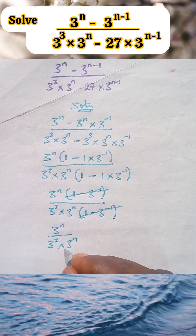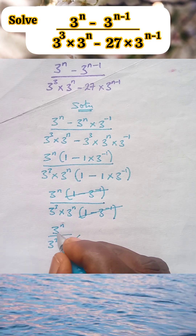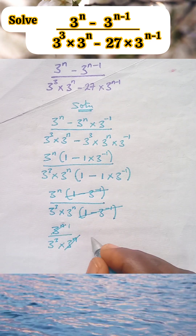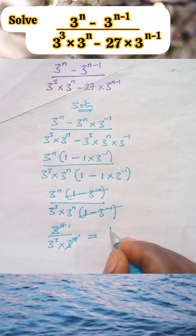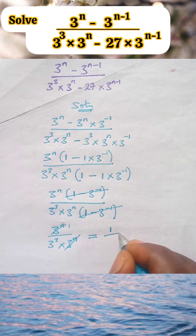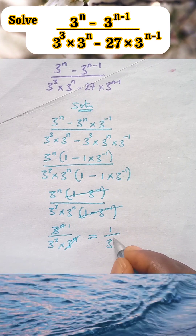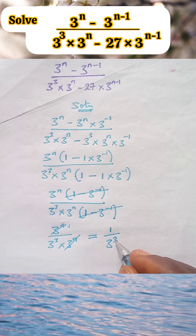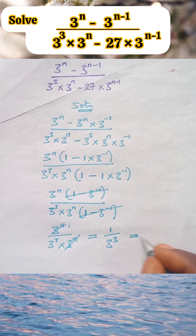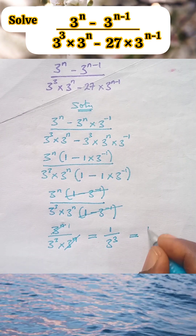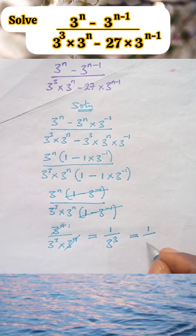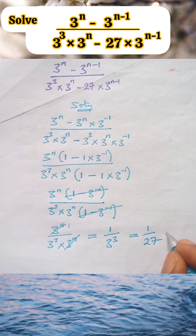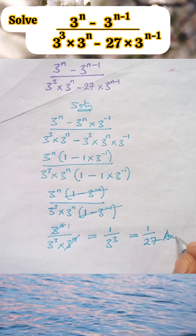Here, 3 raised to the power n can cancel 3 raised to the power n, and we are left with 1 all over 3 raised to the power 3. 1 over 3 raised to the power 3 is 27, so the answer is 1 over 27.